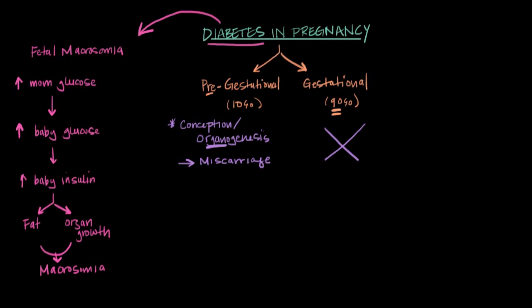In pre-gestational diabetes, the impaired glucose control is more long-standing, so these women are more likely to have diabetic complications such as kidney damage, vascular problems, and damage to the retina. Pregnancy can aggravate these complications and make them worse, so it's really important to monitor these conditions throughout the pregnancy.